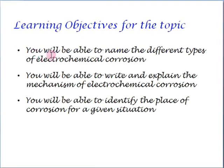At the end of the session, we will be able to name the different types of electrochemical corrosion, write and explain the mechanism of electrochemical corrosion, and identify the place of corrosion for a given situation.